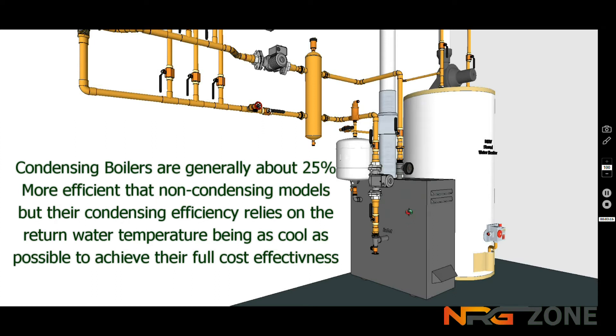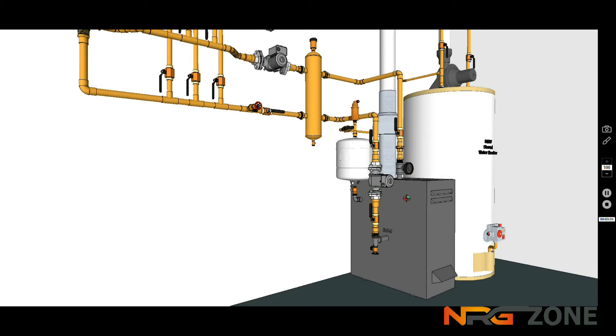Whereas with modern boilers, which are by far more efficient and cheaper to run, they rely on the coldest water going back. In this scenario with the low loss header, the return water is contaminated or mixed with the warm water from the boiler, so it can't get back to the boiler to cause condensation.